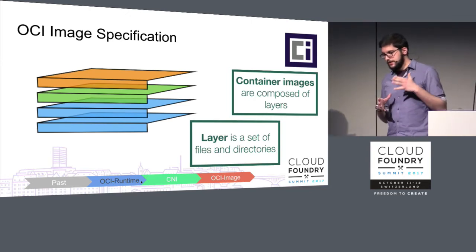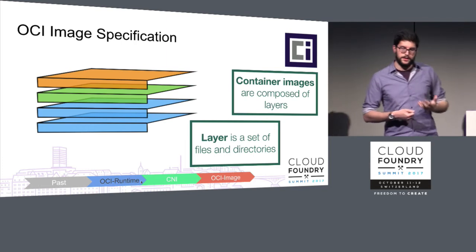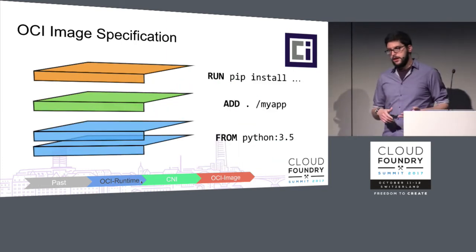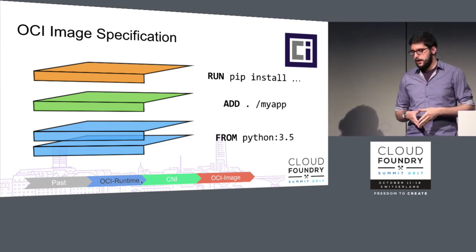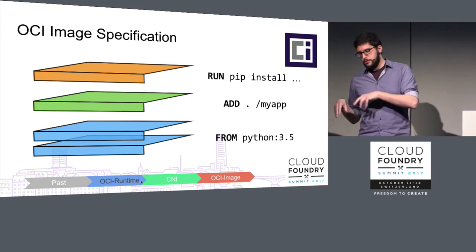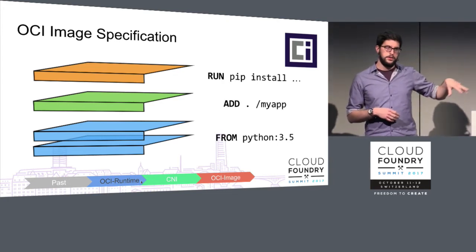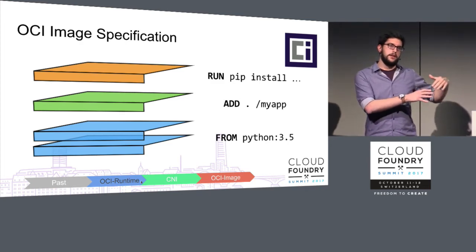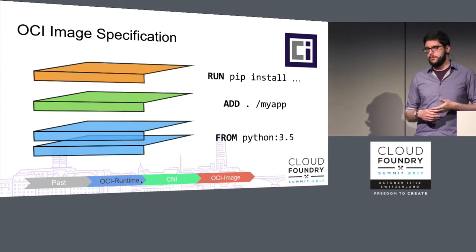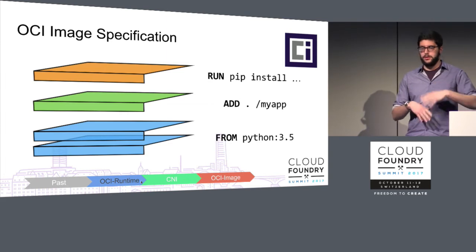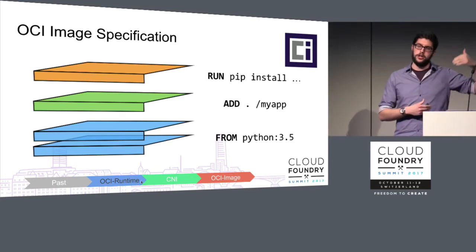An image layer is a set of files and directories — you can think of it as a diff, and you apply all these diffs on top of each other to get an image. In a Dockerfile — reading bottom to top — you start from a base image, in this case Python 3.5. The FROM line pulls the layers of this base image into your container image. The next line adds your code, creating another layer containing the files and directories of your code base. The final line runs pip install, a dependency management tool for Python, which installs all dependencies and goes into a separate layer applied on top of the existing layers.